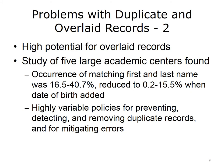In one analysis of five large academic medical centers, the occurrence of patients who have the same first and last name was anywhere from 16% to 40%, although it was reduced when date of birth was added. This analysis also found that these institutions have highly variable policies for how they prevent duplicate records, how they detect them, and how they remove them once found. These institutions also have different approaches to mitigating these errors when they do happen.